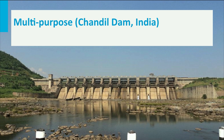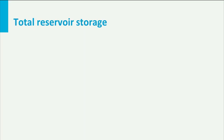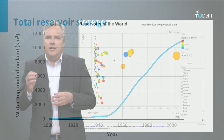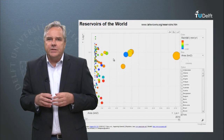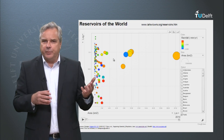Over the past 100 years humanity has built many reservoirs. A staggering 10,000 cubic kilometers of water has been stored in man-made reservoirs since 1930 — equivalent to a sea level rise of 3 cm. Let's look at the reservoirs of the world in the 20th century with this Gapminder software.